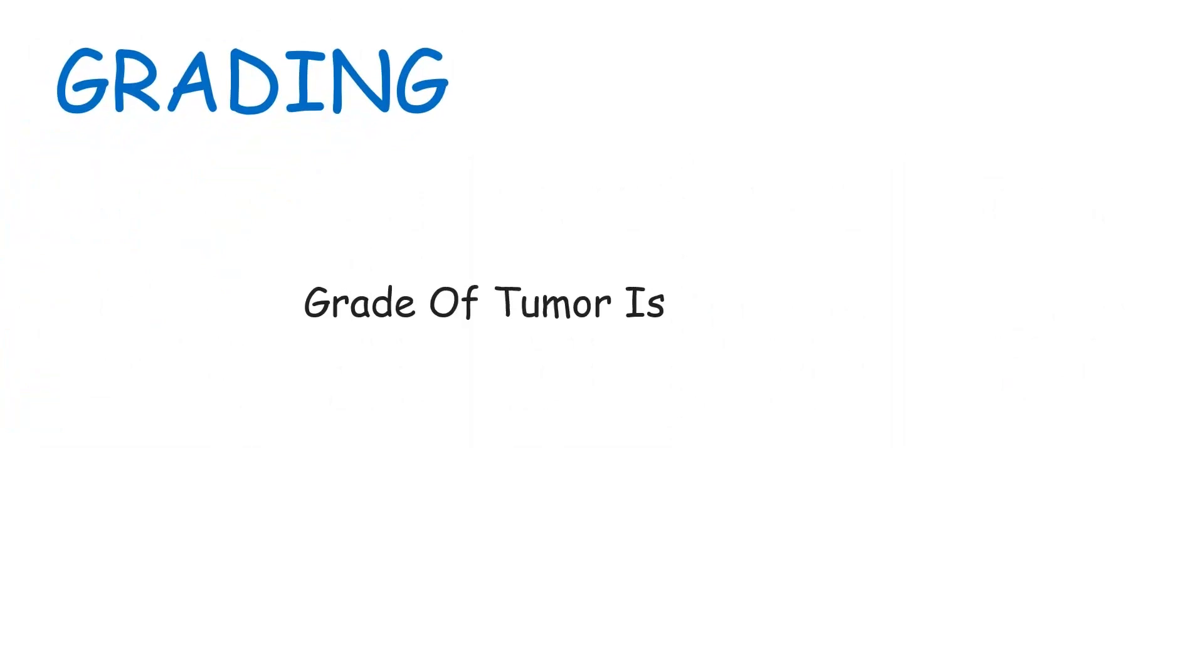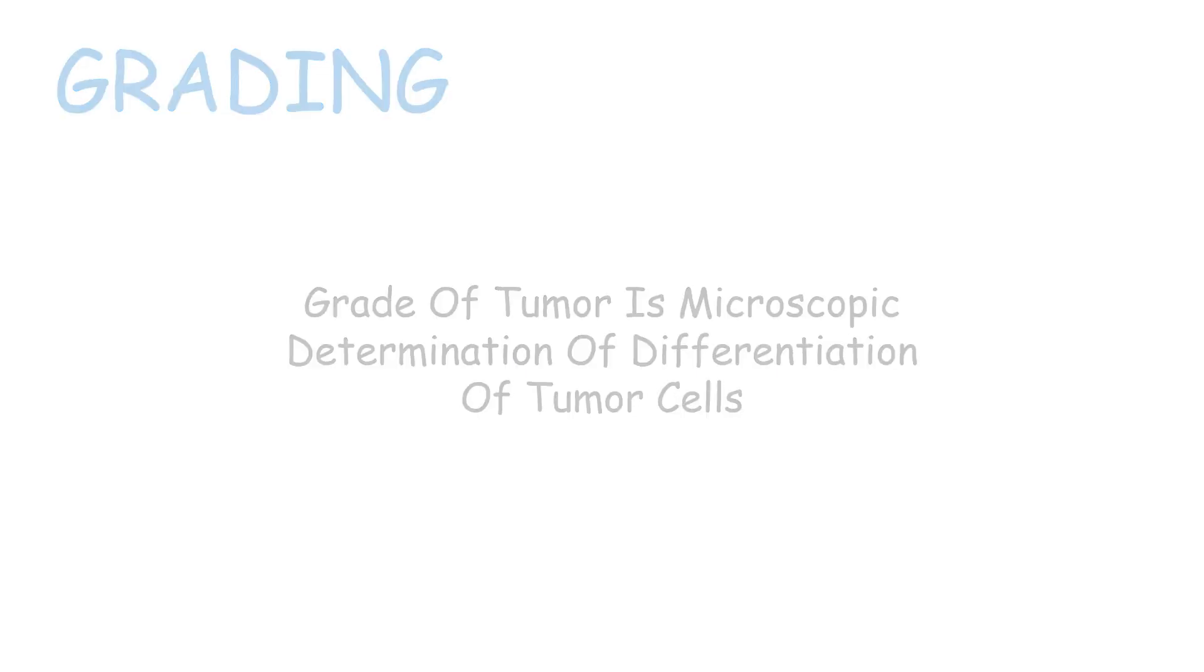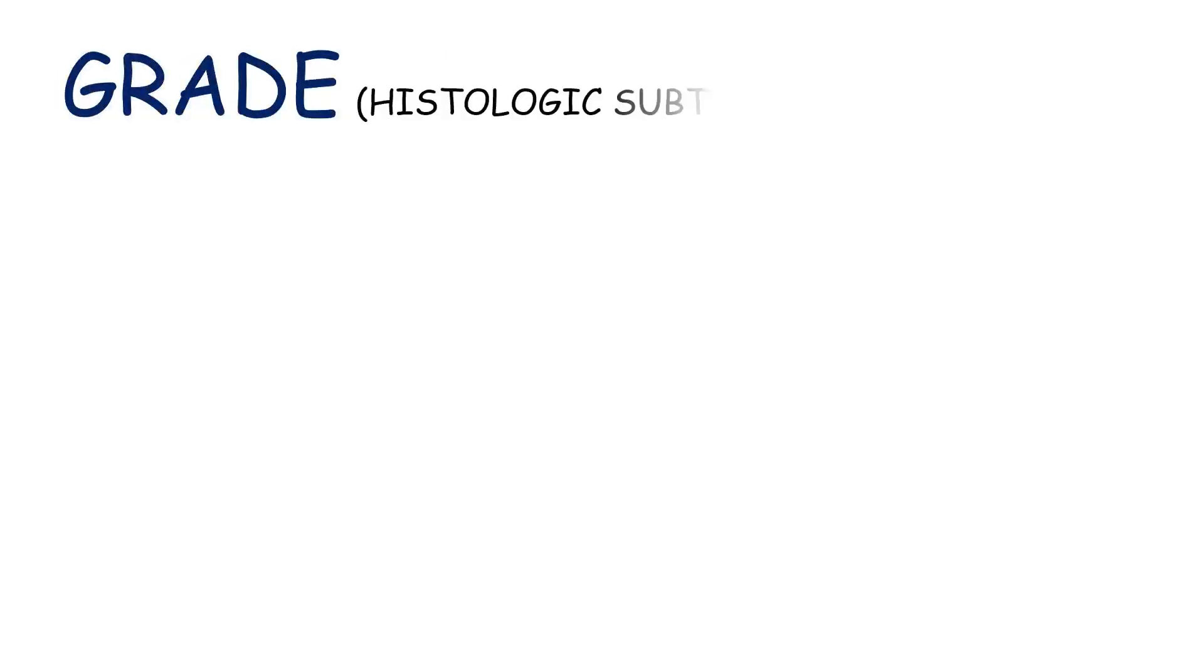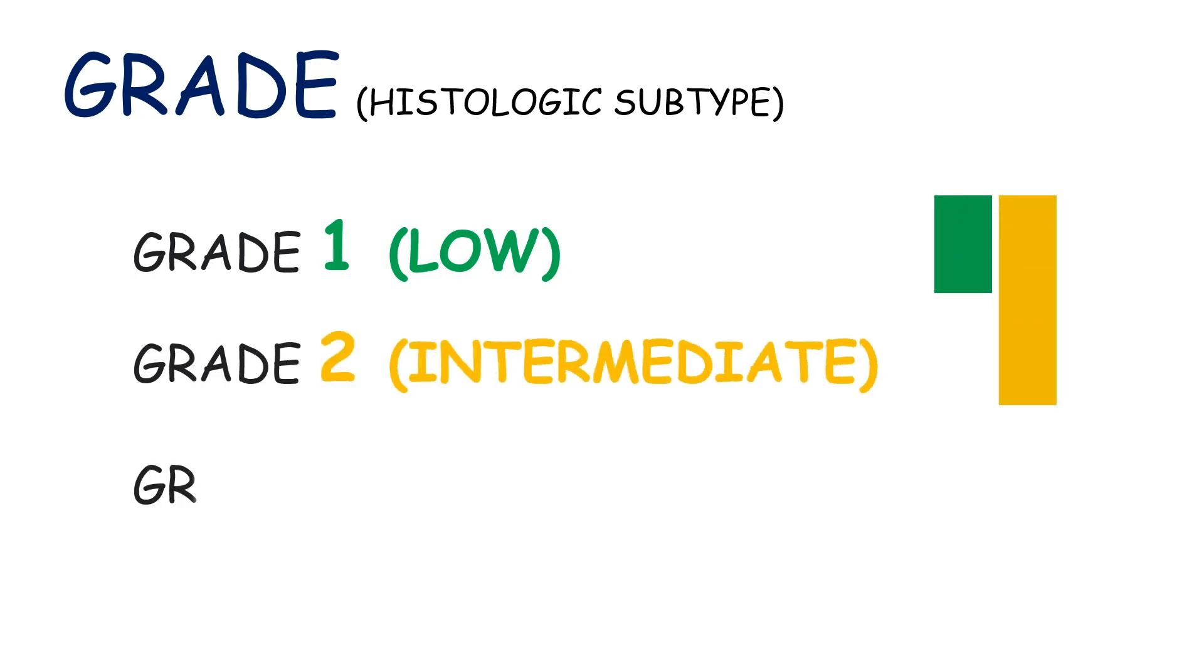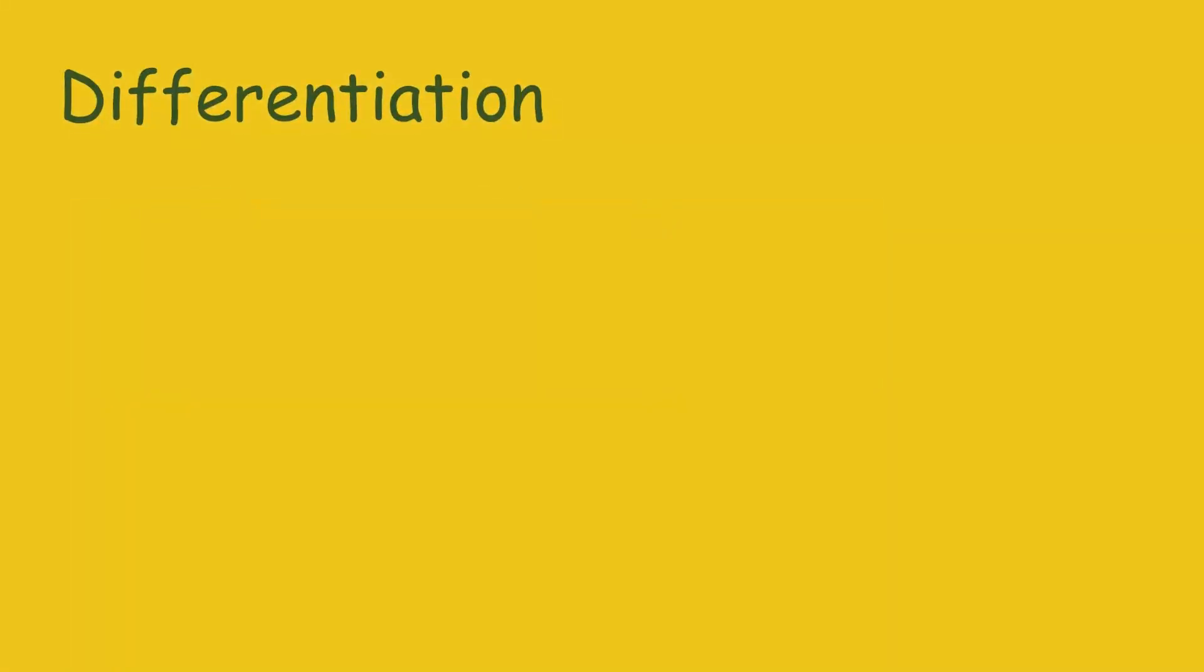A grade of tumor is the microscopic determination of differentiation of the tumor cells. Oral cancers have four histologic subtypes or grades, with grade 1 being termed as low, grade 2 as intermediate, grade 3 as high grade, and lastly grade 4 which represents the undifferentiated cells.